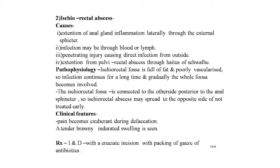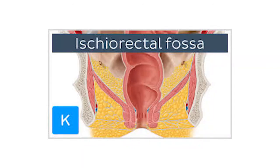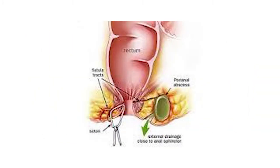Clinical features: pain becomes exuberant during defecation; a tender, indurated swelling is seen. Treatment is I&D with a cruciate incision and gauze packing with antibiotics. Here is a typical picture of the ischio-rectal fossa with the ischio-rectal abscess shown in yellow, and another image showing external drainage of the ischio-rectal abscess.